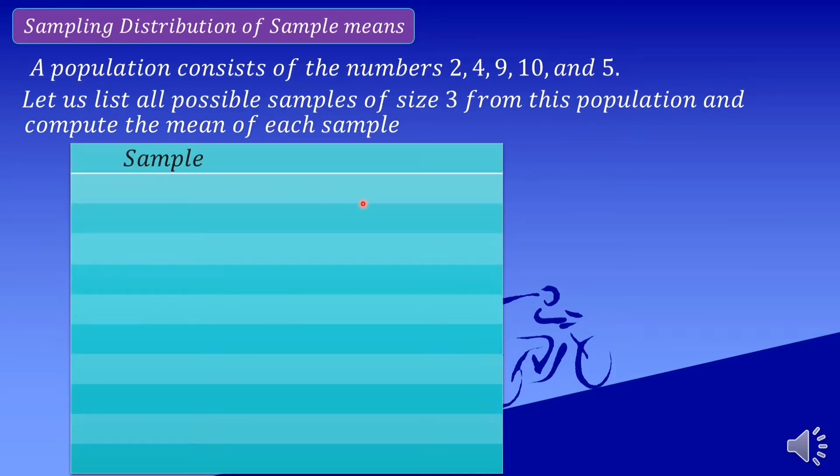Unang table natin consists of two columns, the sample and the mean. Then we are asking for the samples of size 3, so kunin natin ito from this population 2, 4, 9, 10, and 5. So let us take the first three numbers: 2, 4, and 9 for our first sample. Next sample is 2, 4, 10, then 2, 4, 5, then after that is 2, 9, 10.